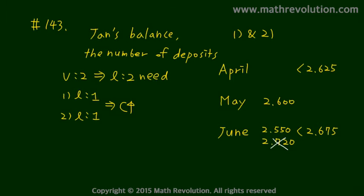In April, same thing, it could be $2,480 or $2,650, but that can't be $2,650 because it has to be less than $2,625.